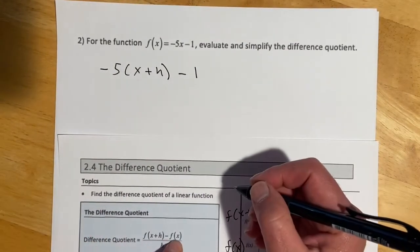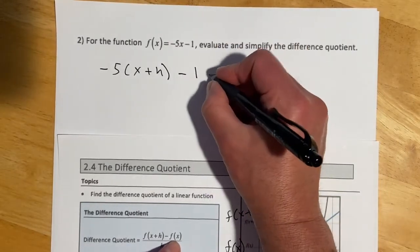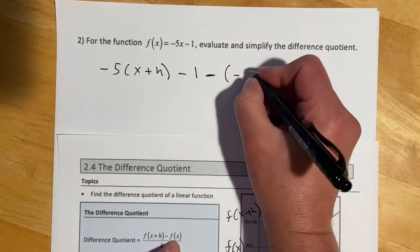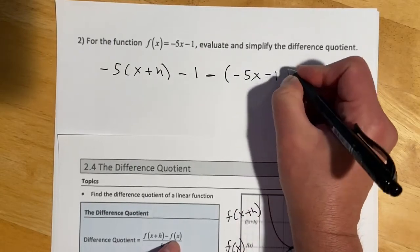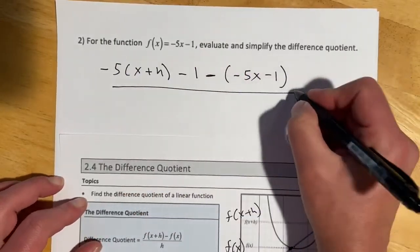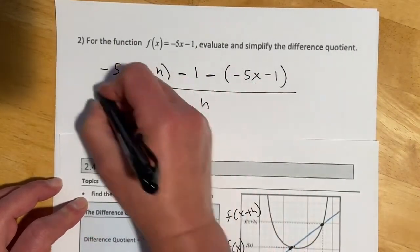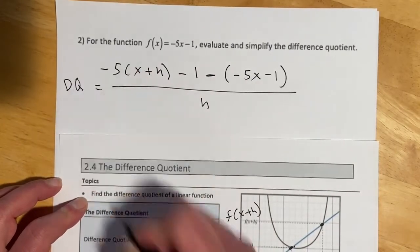And then next, we subtract f of x, which is just the original function. So minus, and that all-important parenthesis, negative 5x minus 1. We'll close that. And then that's all over h. And I'll just abbreviate this difference quotient.